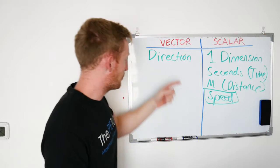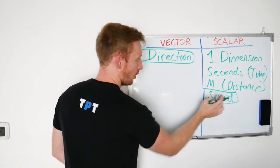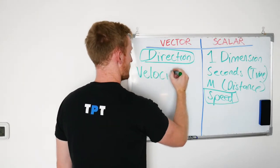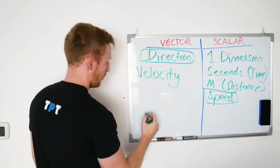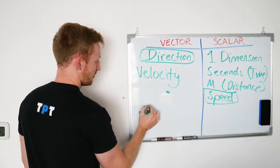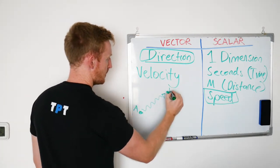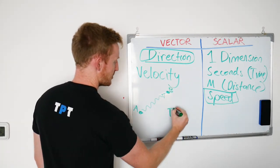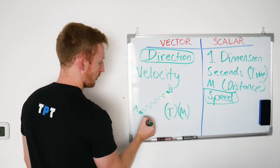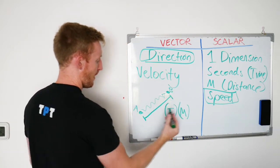If we were to incorporate the second dimension and include a direction, that's when we would start to talk about velocity. Where we start with point A and point B and regardless of the route that an object takes to get from A to B, we have a time, we have a distance, and we also have the displacement or the direction.